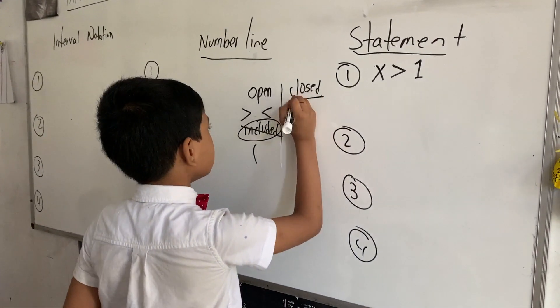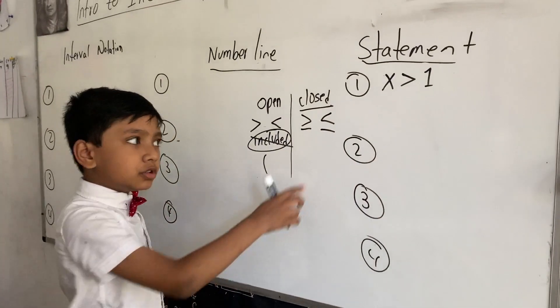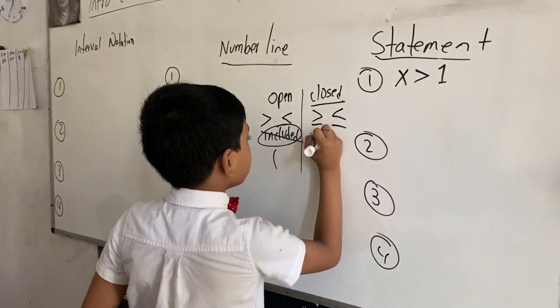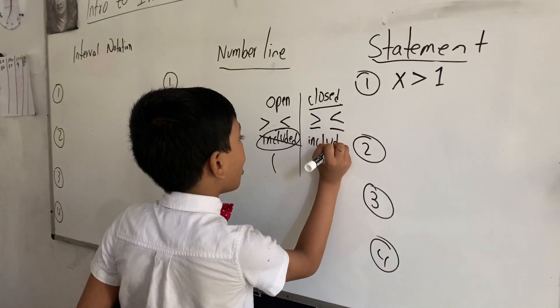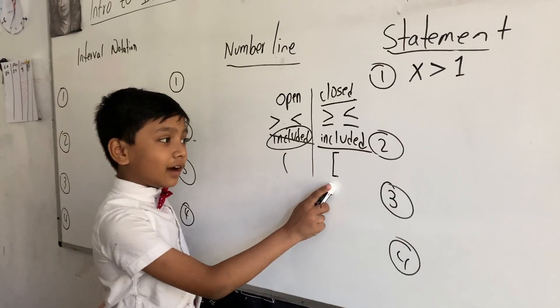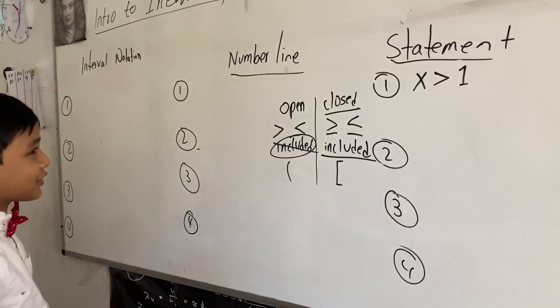A closed one is basically the opposite. And you have an equal to sign on the bottom. So the number that the closed circle is on is included. And you can put a bracket, a square bracket, on it in the interval notation.